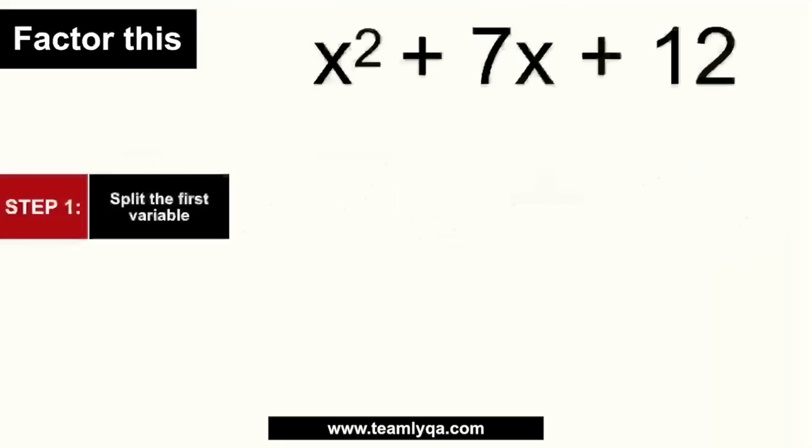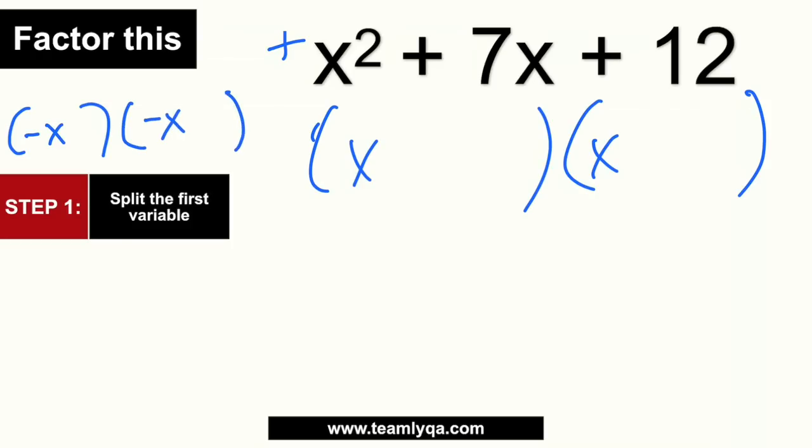What am I going to do if I factor this? The first thing you're going to do is to split the first variable. This x² here, we're going to split it. How do I split it? I'll split it into two x's. So I can put x and then another x. Now, keeping in mind that because this is positive x², it could be either positive x times positive x, or it could be negative x times negative x.